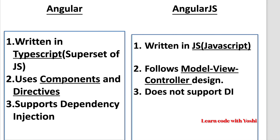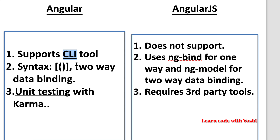The Angular structure uses components and directives whereas AngularJS follows a model-view-controller design. One important feature of Angular is dependency injection, which AngularJS doesn't support. Angular is also equipped with a CLI tool — a command line interface tool — whereas AngularJS doesn't support this.